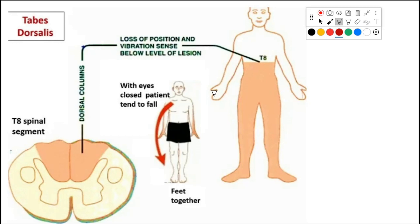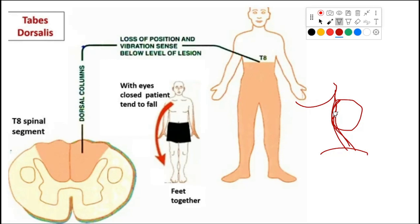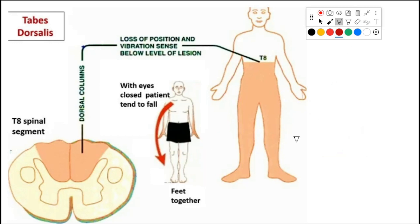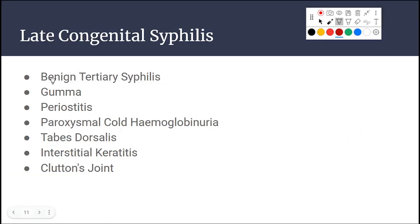Late congenital syphilis may also involve the cornea — the outer layer of the eye — presenting as interstitial keratitis. There may also be painless effusion (accumulation of fluid) in the knee joint, called Clutton's joint. To summarize: late congenital syphilis features include benign tertiary syphilis (gumma), periostitis, paroxysmal cold hemoglobinuria, tabes dorsalis, interstitial keratitis, and Clutton's joint.